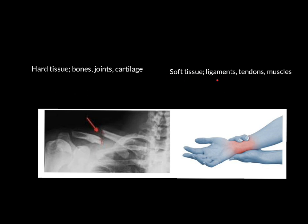Soft tissue injuries are injuries to ligaments, tendons, muscles, and things like that. These can be acute or chronic. Fractures can be chronic as well. We're going to look at all these different categories of injuries and give you a few examples — so we've got acute, chronic, hard tissue and soft tissue.